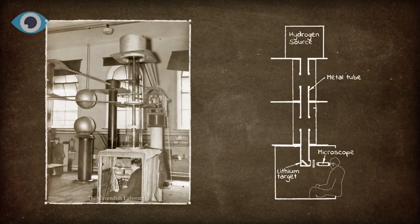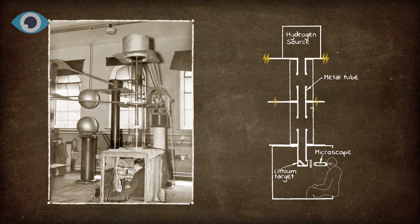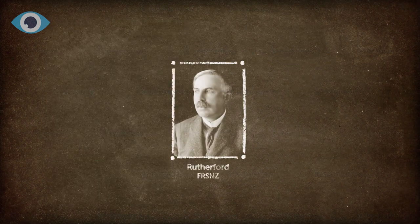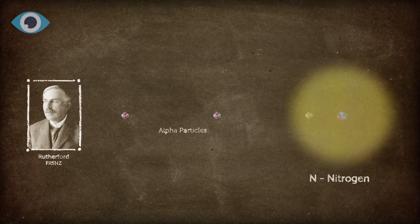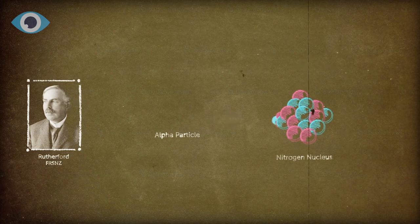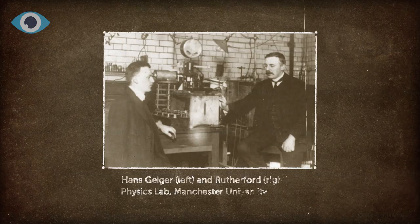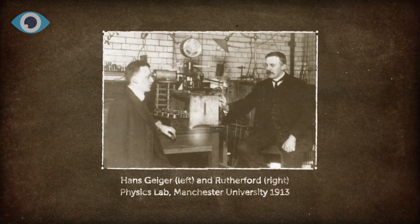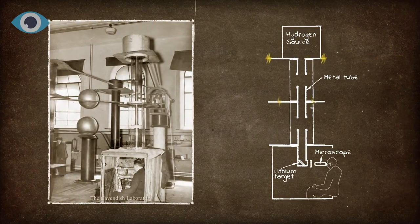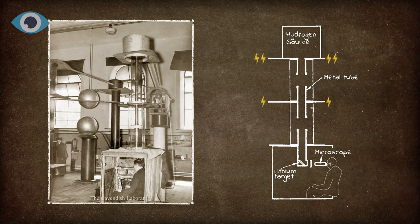The main motivation to build accelerators arose at the beginning of the 20th century, when Ernest Rutherford discovered in 1919 that he could split nitrogen atoms by bombarding them with alpha particles from natural radioactive sources. To continue his research, he demanded a source of higher energy and higher-intensity atomic projectiles than those provided by natural radioactive sources.